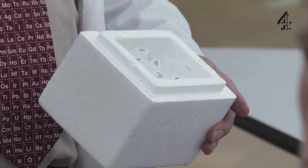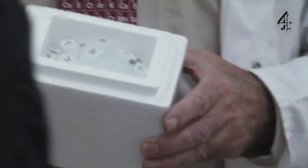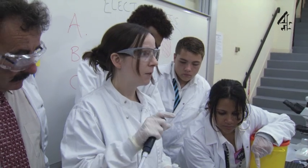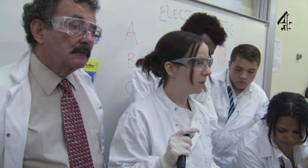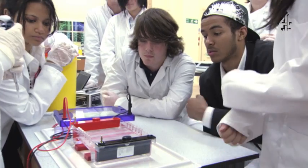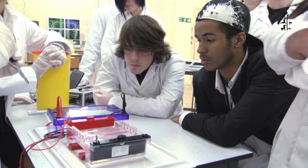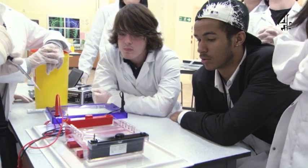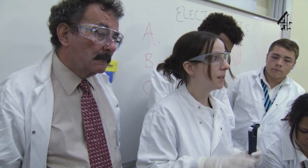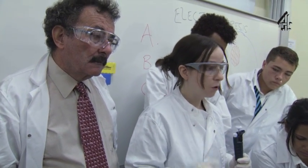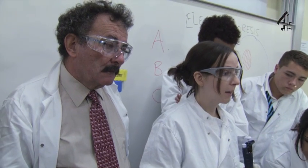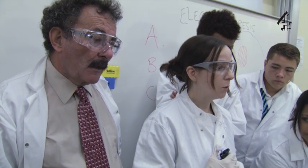We're going to give you the samples labelled C, which is the one from the crime scene, and the samples labelled A and B, which are from the two suspects. You then load those into your gel and we're going to turn the current on. The DNA will move out and give you different patterns for different people, and you should be able to work out who did the crime.